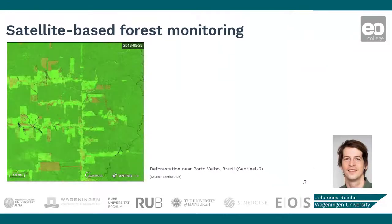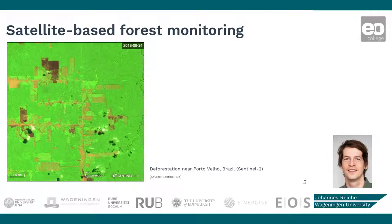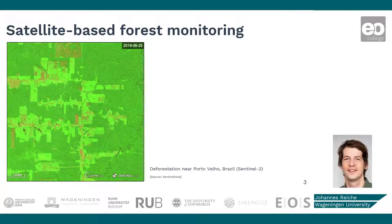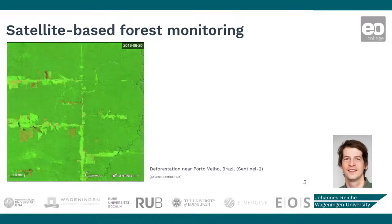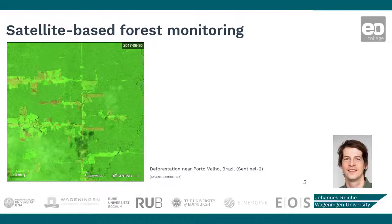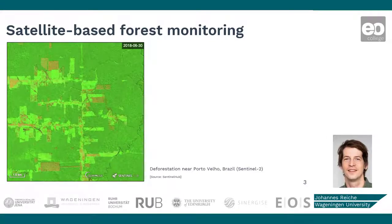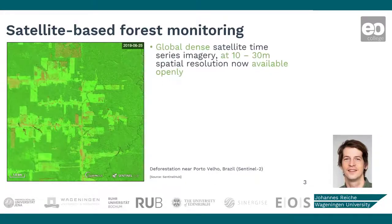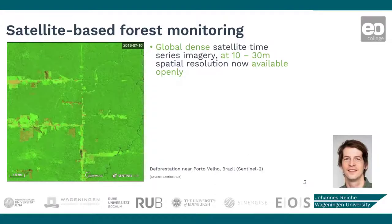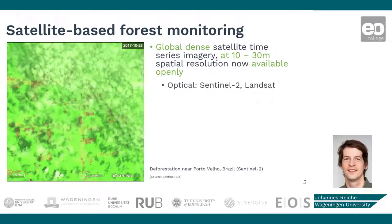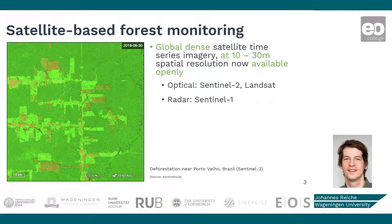This animation shows a high-resolution time series of Sentinel-2 imagery over an area in the Brazilian Amazon for a three-year period, covering mid-2016 to mid-2019. You can clearly identify large area deforestation patches, but also some re-greening after the areas have been cut. With the open availability of such high-resolution satellite data, we now live in a data-rich age, enabling a wide range of detailed satellite-based forest monitoring applications at local to global scale.